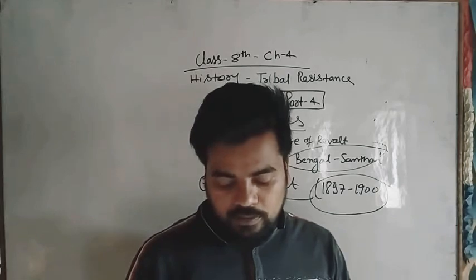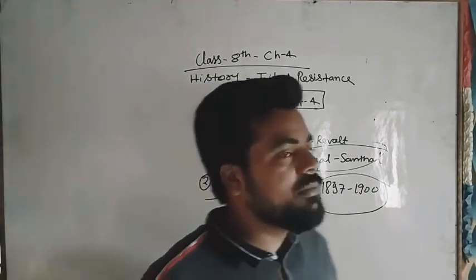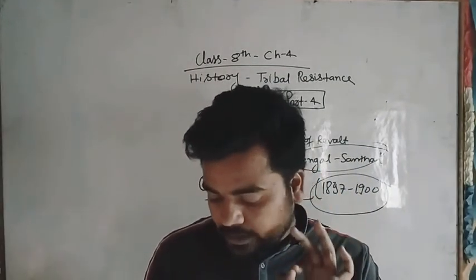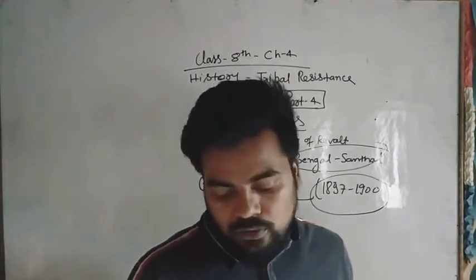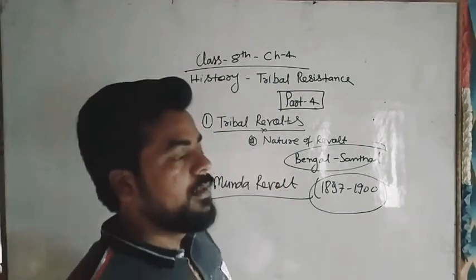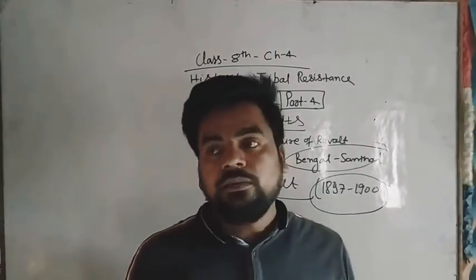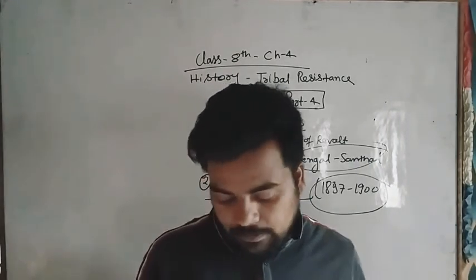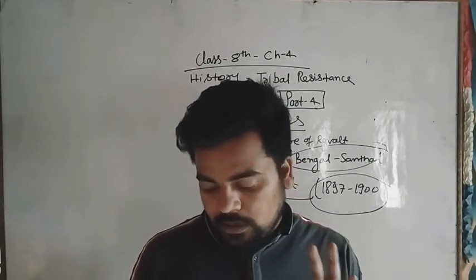Birsa Munda was probably born among the Mundas, oppressed by the outsiders known as Dikkus. When he joined a protest against the British taking over village wasteland, he became a prominent leader. In 1894, the failure of the monsoon caused the spread of starvation and epidemics.